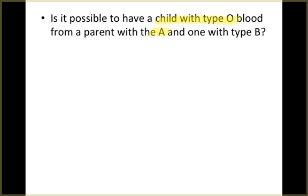So make sure you're able to do these. Let's see, we have a child with type O, one parent with A and one with B. If you remember, there are two possible ways we can have type A blood. We can either be AA or we could be AO.